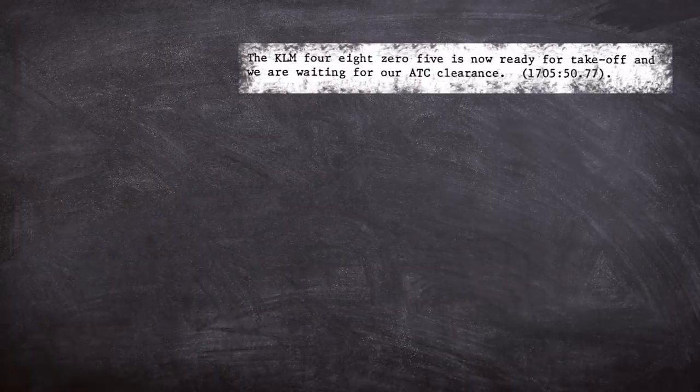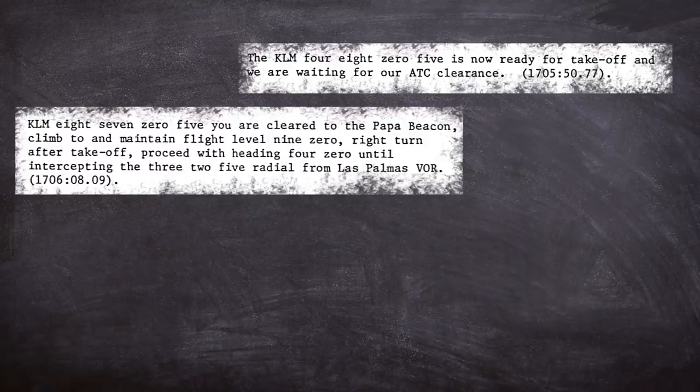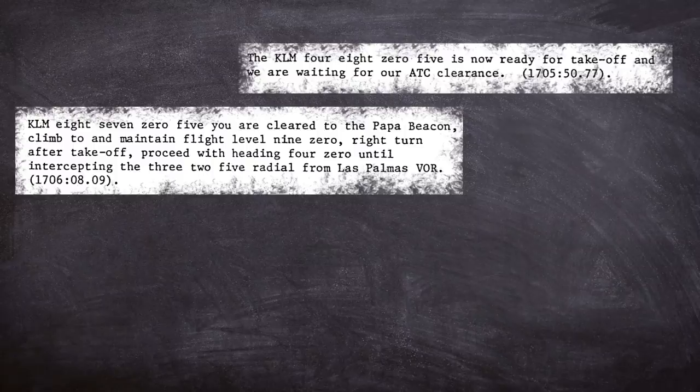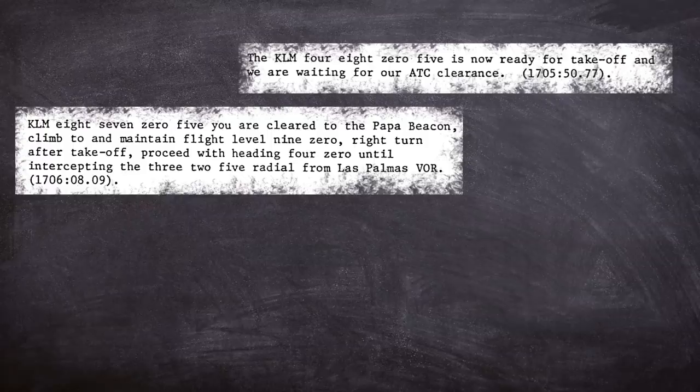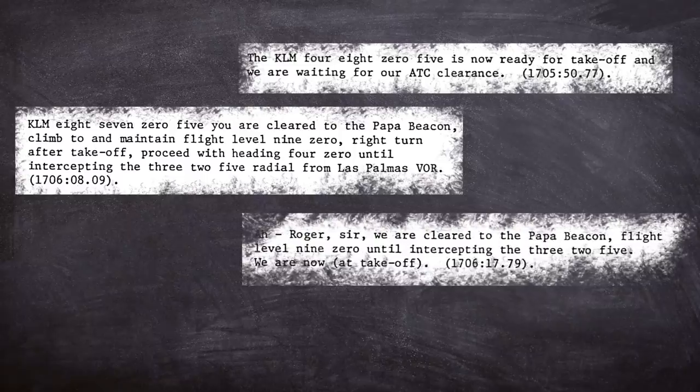During the vital clearance request stage, once the KLM had lined up a misunderstanding led the crew to believe they had clearance. The statement by the first officer we are ready for take off and we are awaiting ATC clearance was responded to from the tower with you are clear to Papa Alpha Beacon, which was the ATC clearance. The intention of the ATC was to inform them of their route after take off but this was understood as you are clear to go.